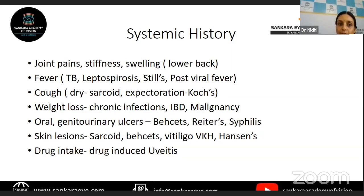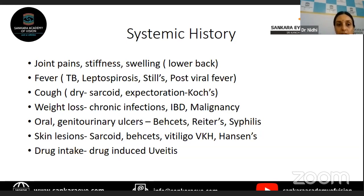Cough will help you in determining the presence of any pulmonary disease like sarcoid — whether it is a dry cough or with expectoration helps identify pulmonary disease. Weight loss will guide you towards the presence of some chronic infection causing malnutrition to the patient, or inflammatory bowel diseases causing malnourishment, or malignancies which could be the reason for this form of uveitis.